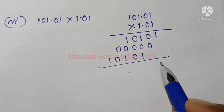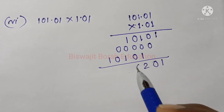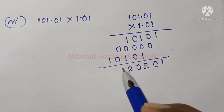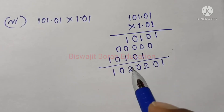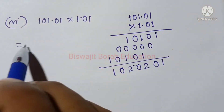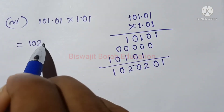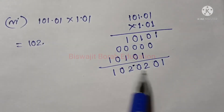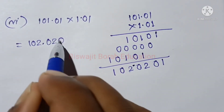So 1, 0, 2, 0, 2, 0, 1 — it will be part of the rule. So this is 102.0201.